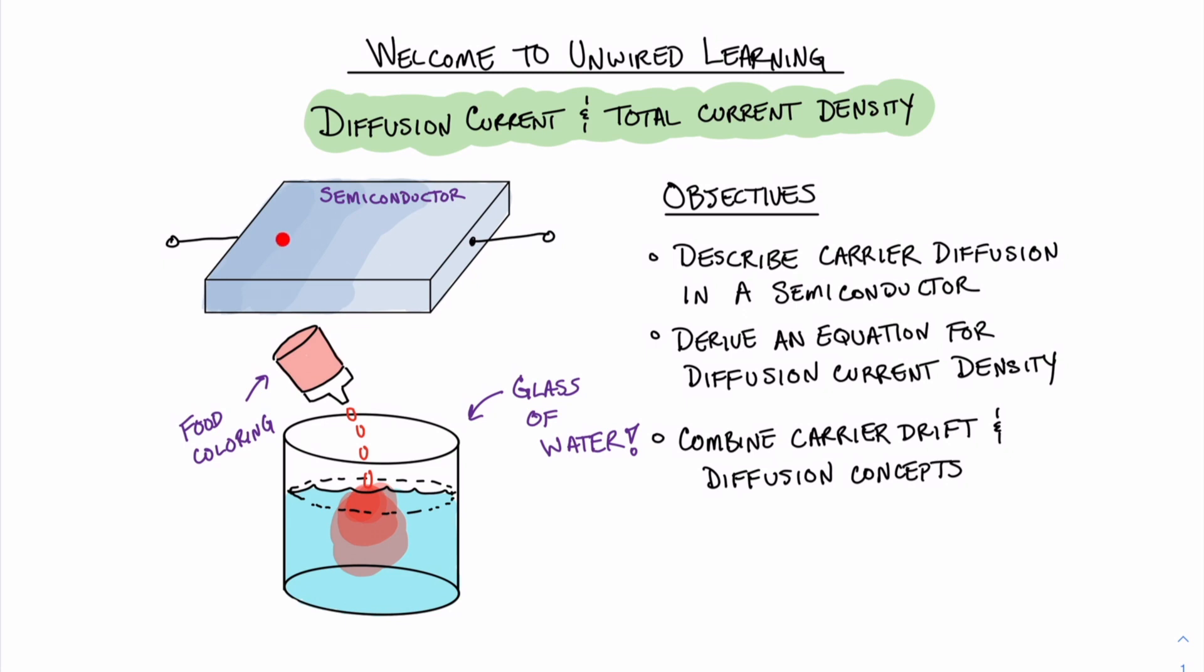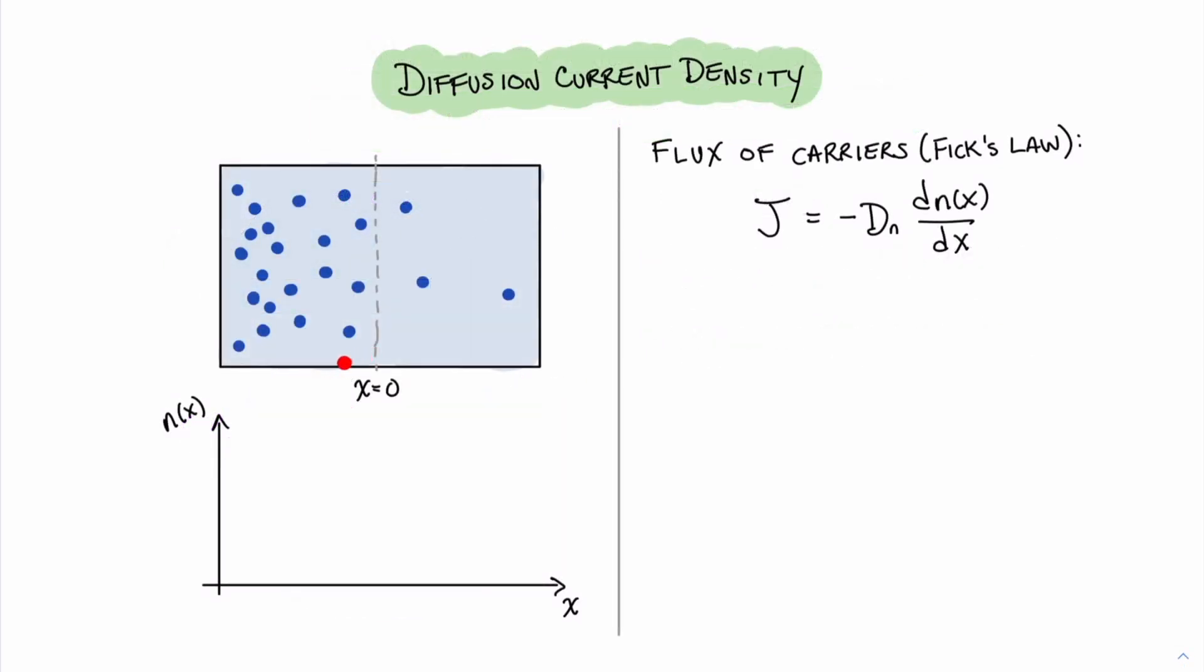But what kind of movement governs these carriers, and how do we express that in terms of an equation? Here, I have a simplified picture of that semiconductor, and I have a bunch of blue dots that represent charge carriers. These carriers want to equalize themselves throughout this material. If we were to look at how the carriers flow across the threshold, say at x equals zero, we would see that there's a net flow across that threshold.